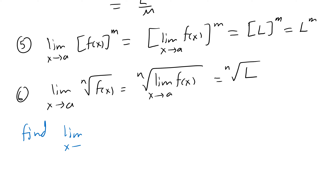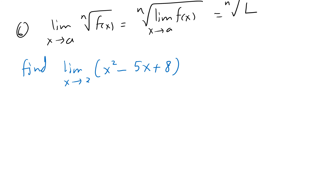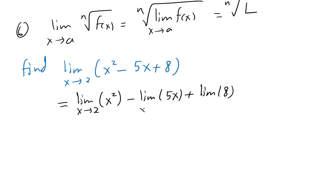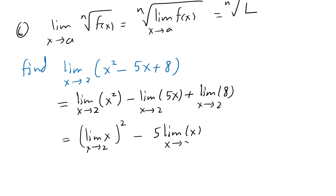Find the limit as x approaches 2 of x² − 5x + 8. The way it works is: the limit of this is the limit of the first term minus the limit of the second term plus the limit of the last term. By the properties you can move the limit inside — limit of x² as x approaches 2, take the 5 outside, as x approaches 2.